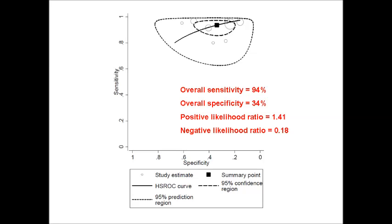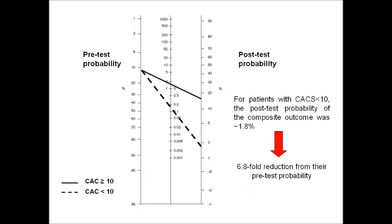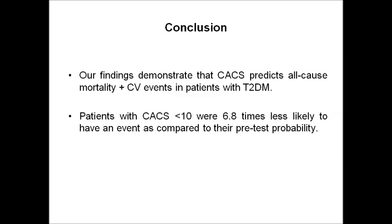Here I would like to highlight the negative likelihood ratio, which is strikingly low at 0.1. This low negative likelihood ratio means that the coronary artery calcium score is especially helpful in patients with Type 2 Diabetes if it's negative. To illustrate that, we can see here in a Bayes nomogram the pre-test probability of events in this population, which is 12%, and if we follow the dashed line, we can see that for patients with coronary artery calcium score lower than 10, the post-test probability of events is 1.8%, which means a 6.8-fold reduction from their pre-test probability.